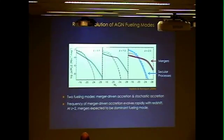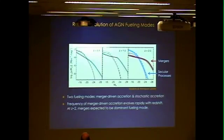Essentially, AGN fueled by stochastic means. Our expectation was that if you sample the AGN population around the knee of the luminosity function — about 10^44 ergs per second — you should find that the hosts are predominantly ongoing mergers or merger remnants, especially if there's a time lag between when the merger happens and when the AGN kicks on.